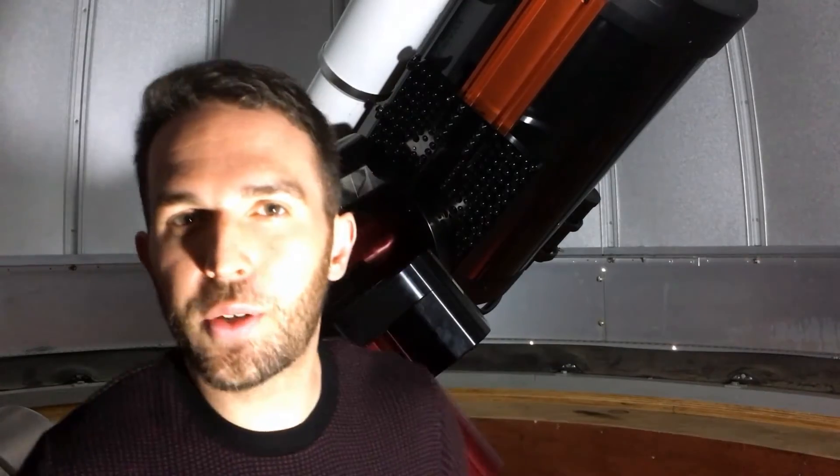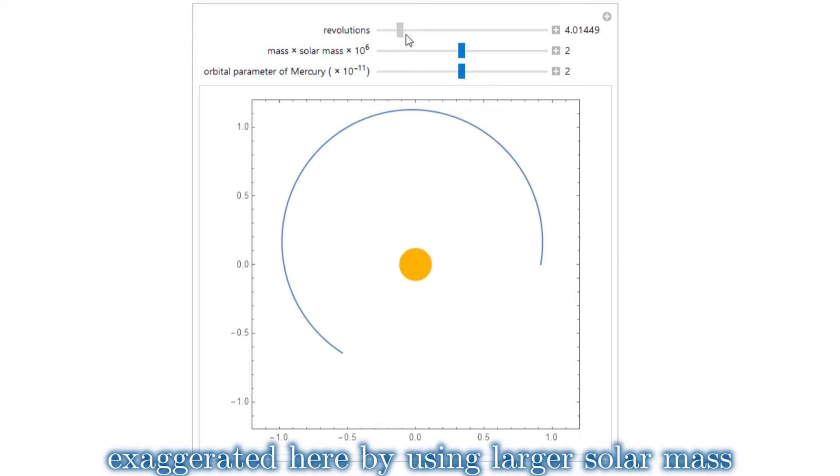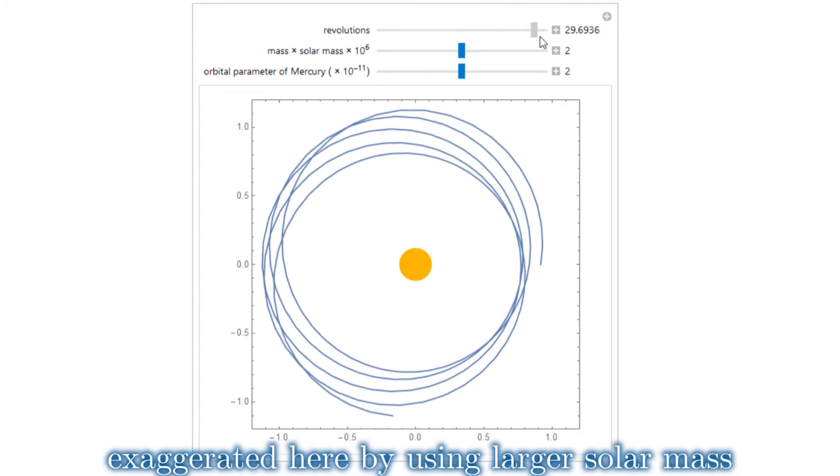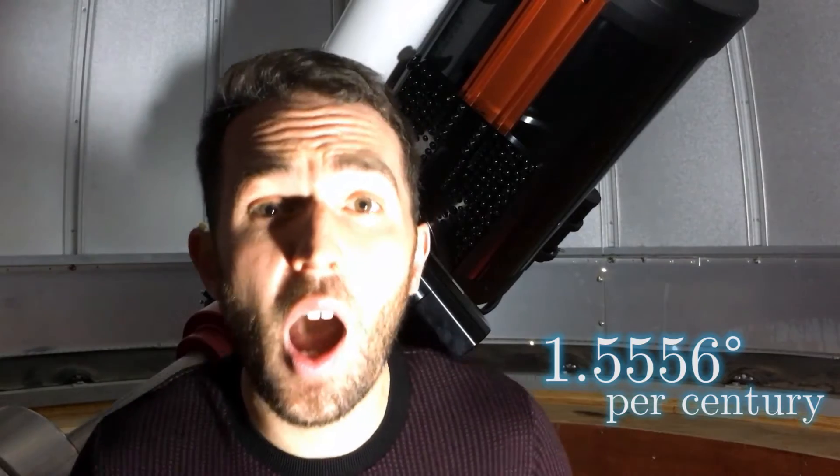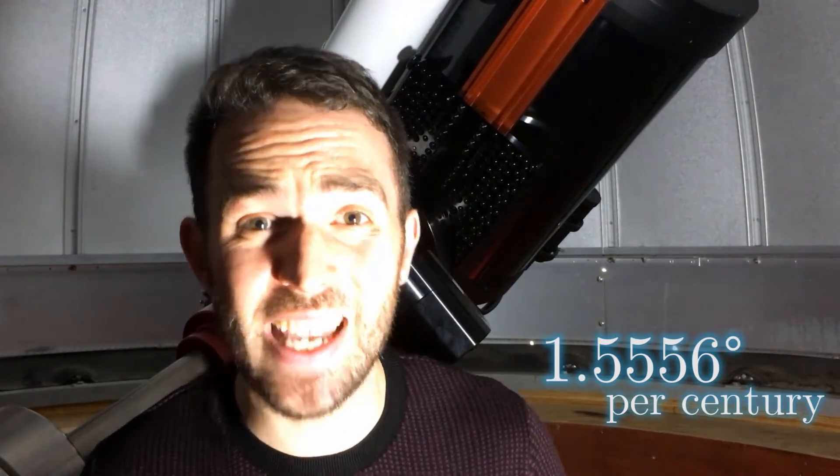In fact, the transits of Mercury are gradually drifting later and later in the year. Before 1585 they would happen in April and October. That's because Mercury's orbit is precessing very slowly, rotating around the sun just over one and a half degrees per century.